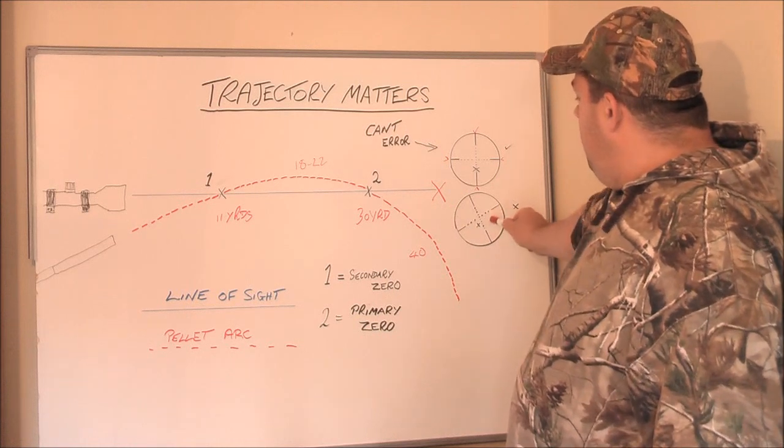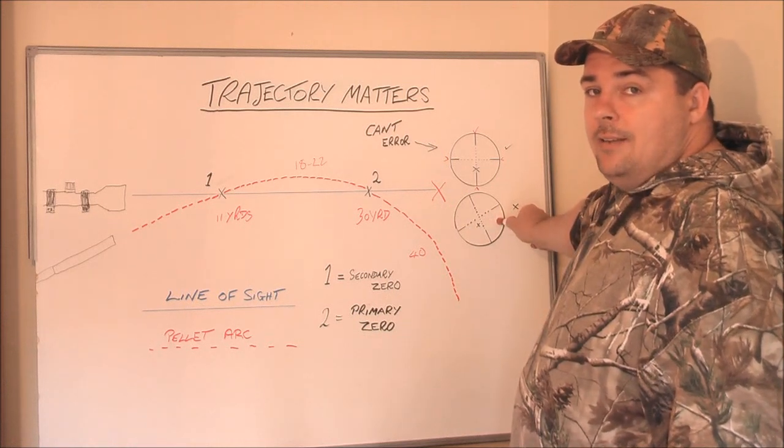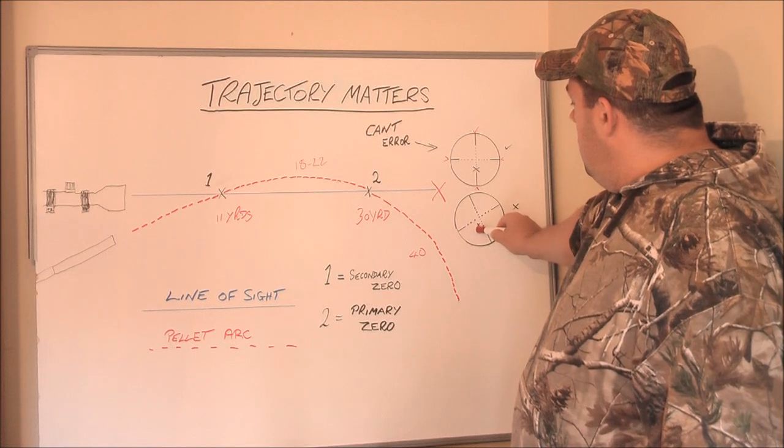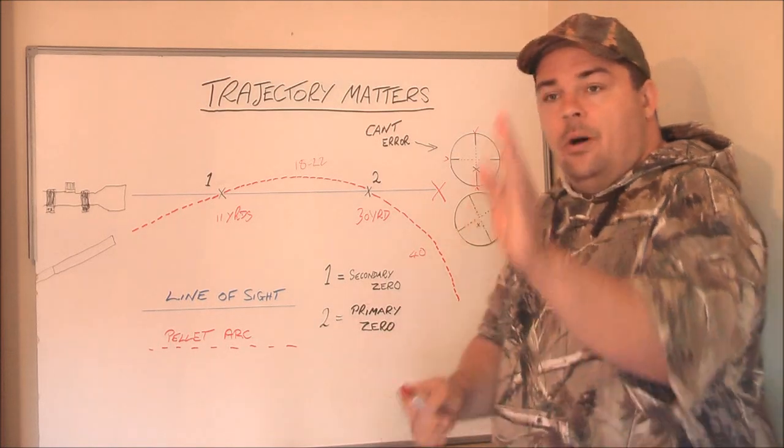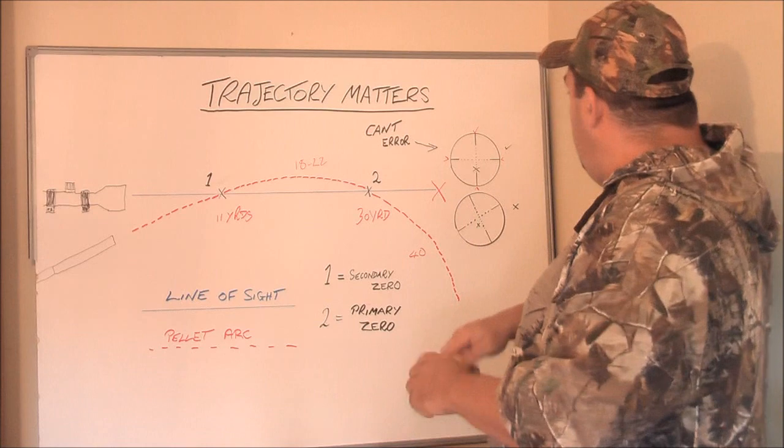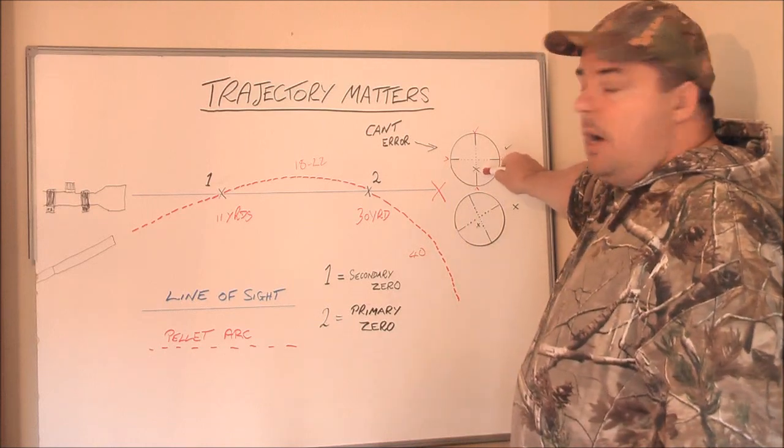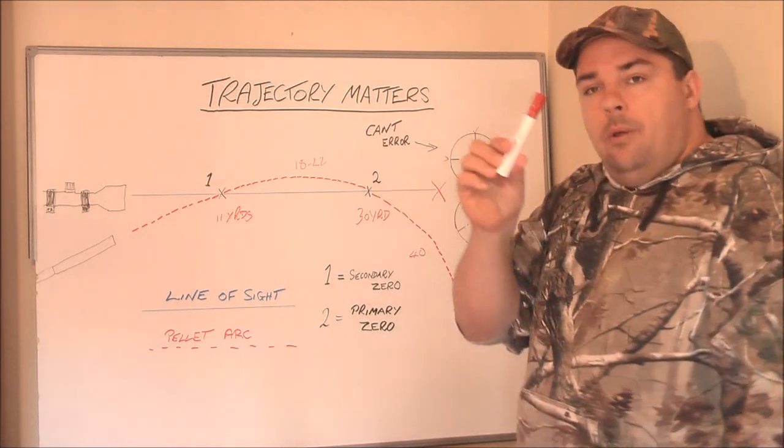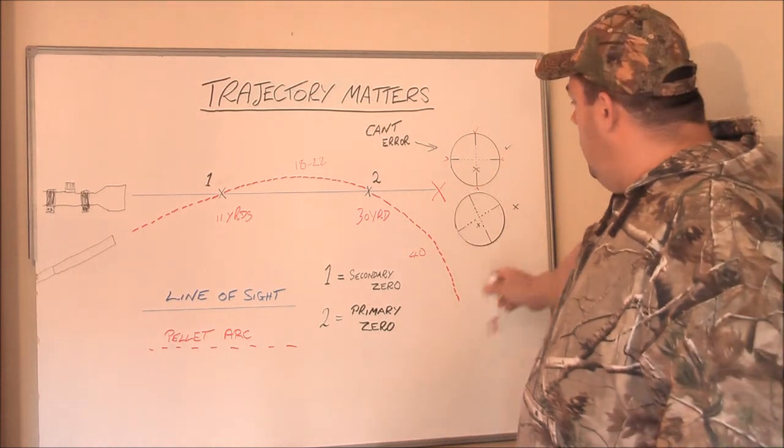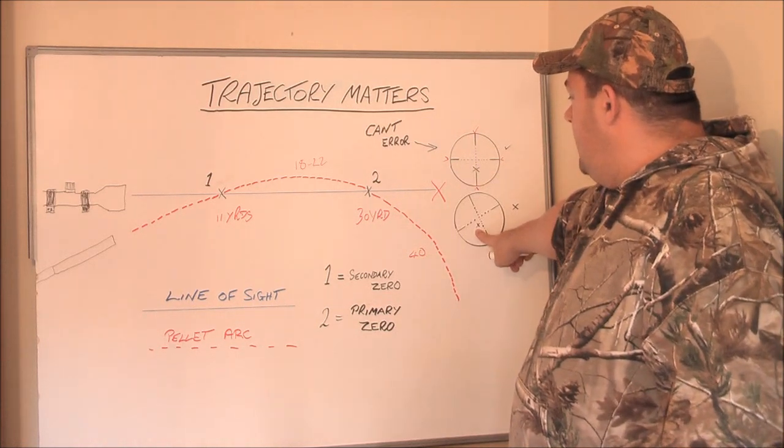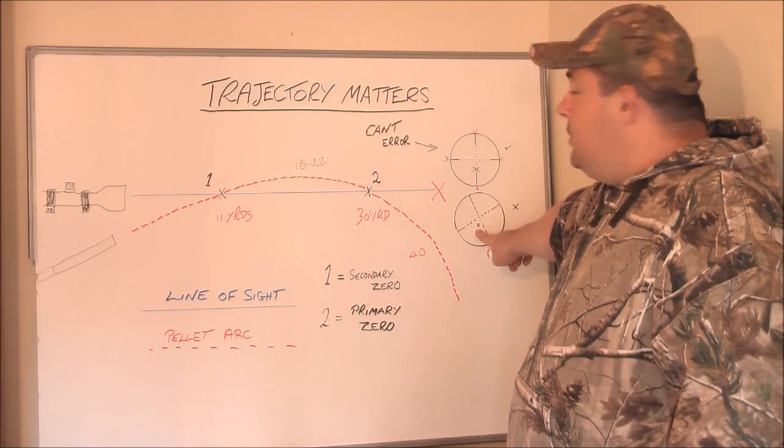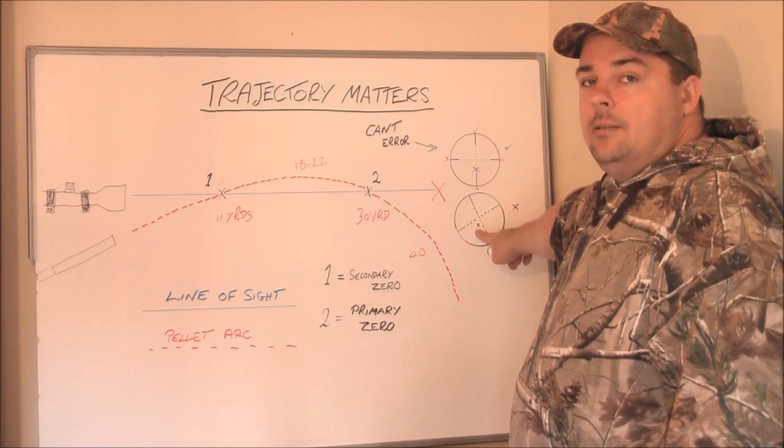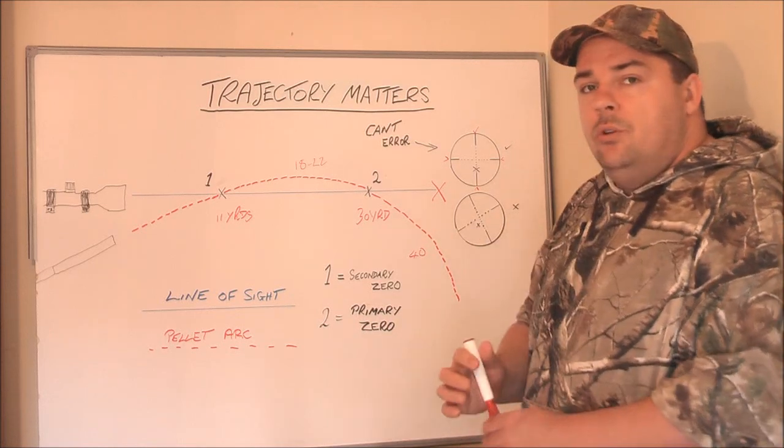However, if the rifle is canted, what will happen is the pellet will not follow the line. So if you're holding your second mil dot under on your target, but the reticle is canted to one side, if you can see here, this X is representing a likely place that that pellet will hit. This is known as false wind.